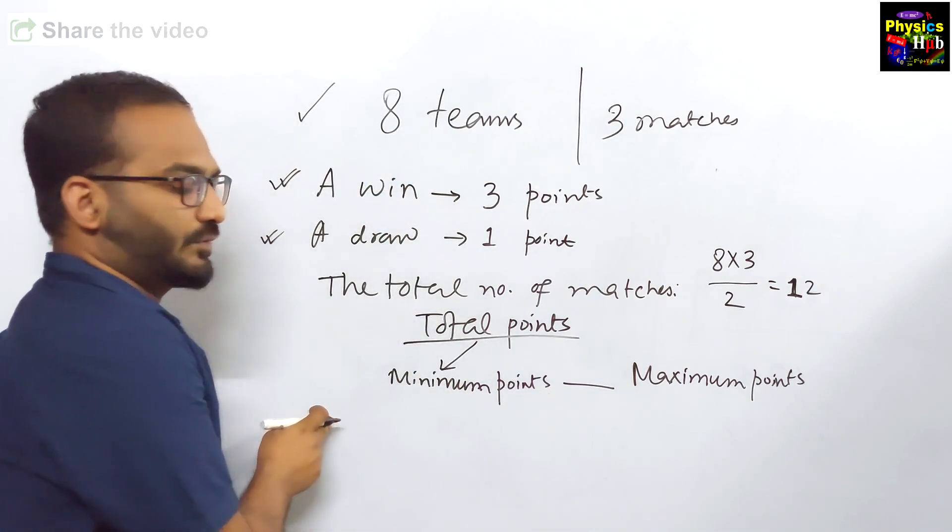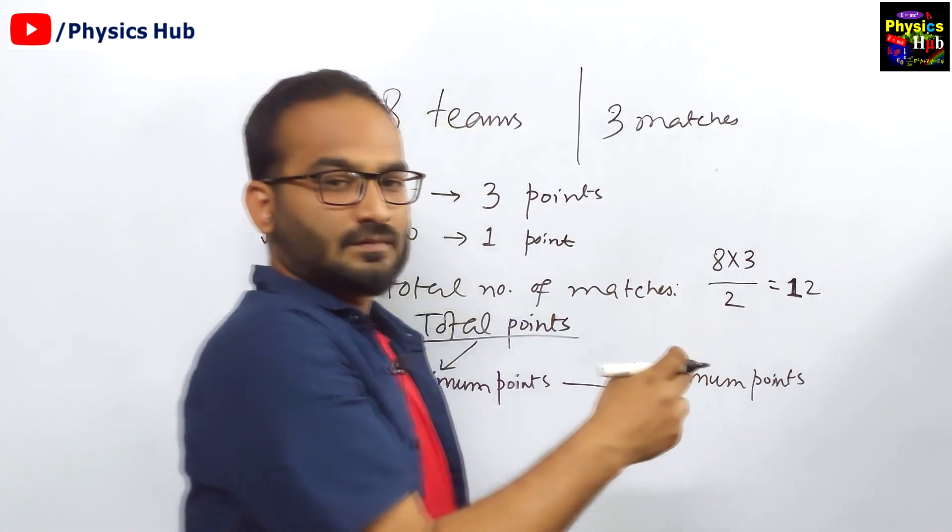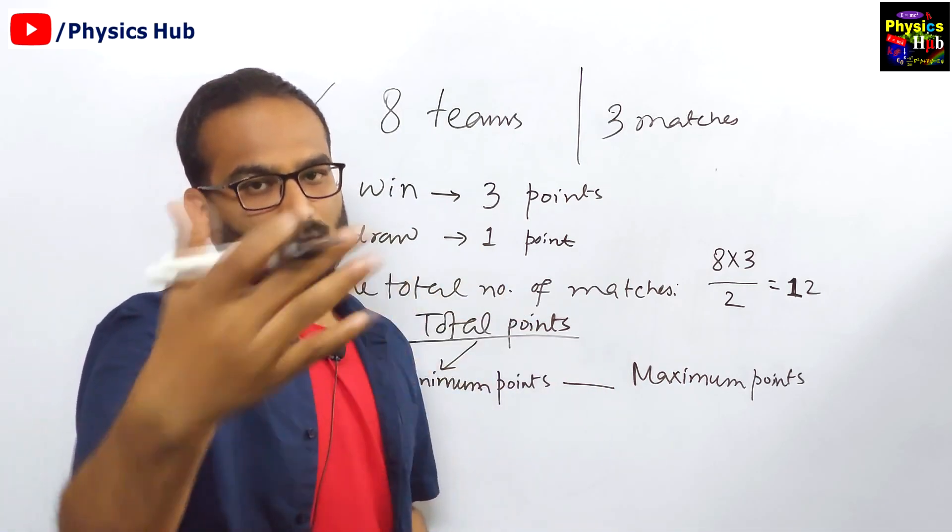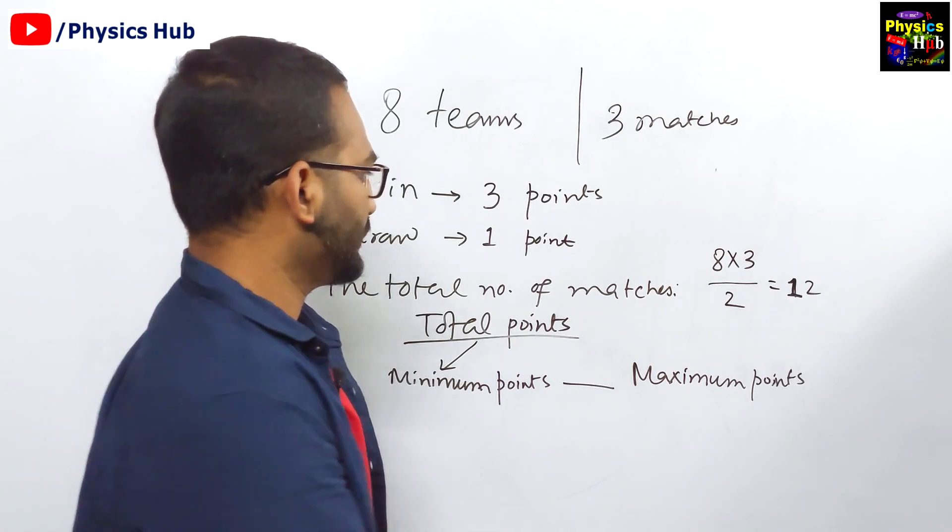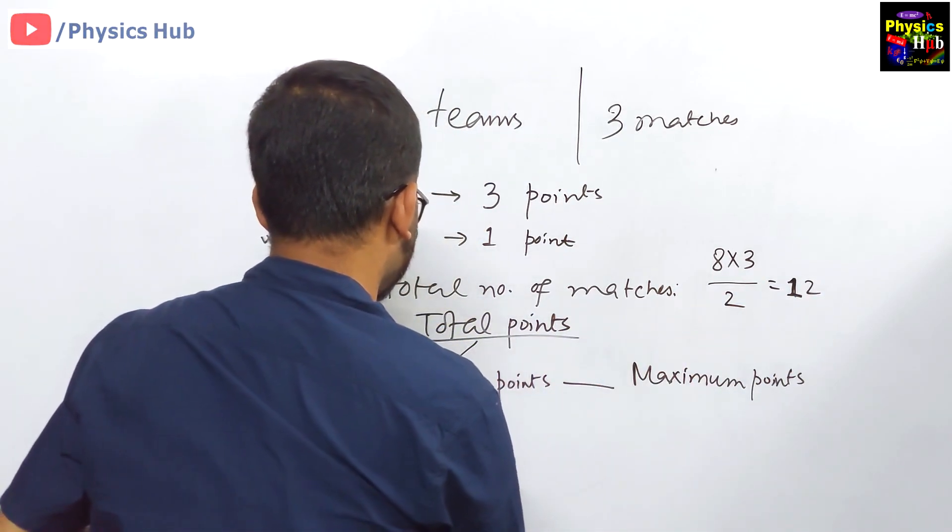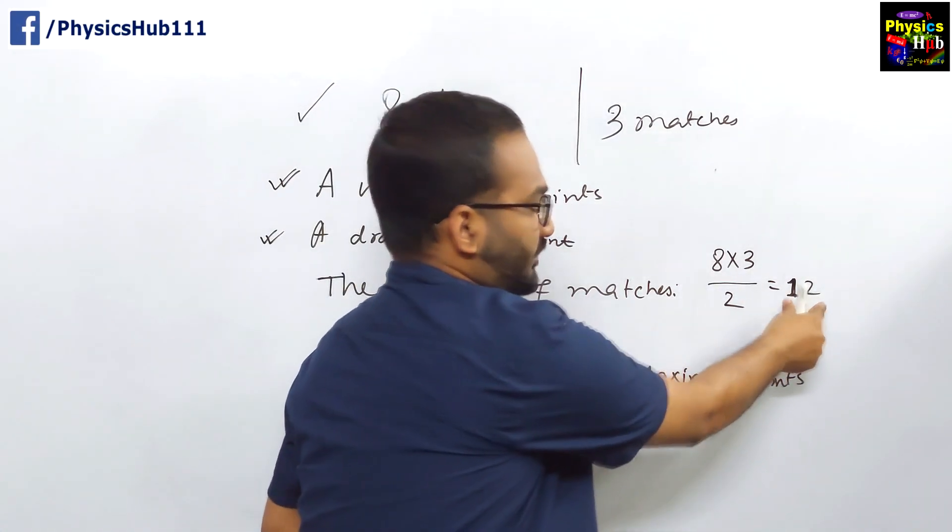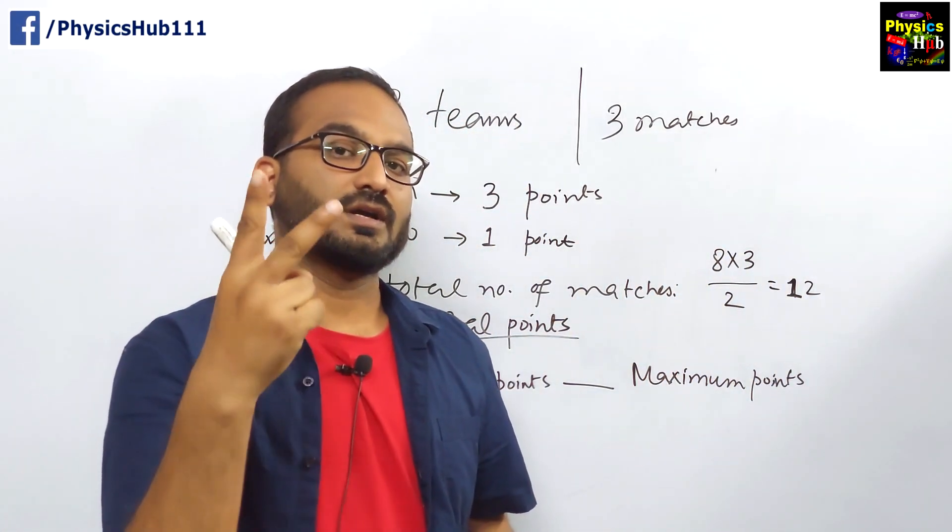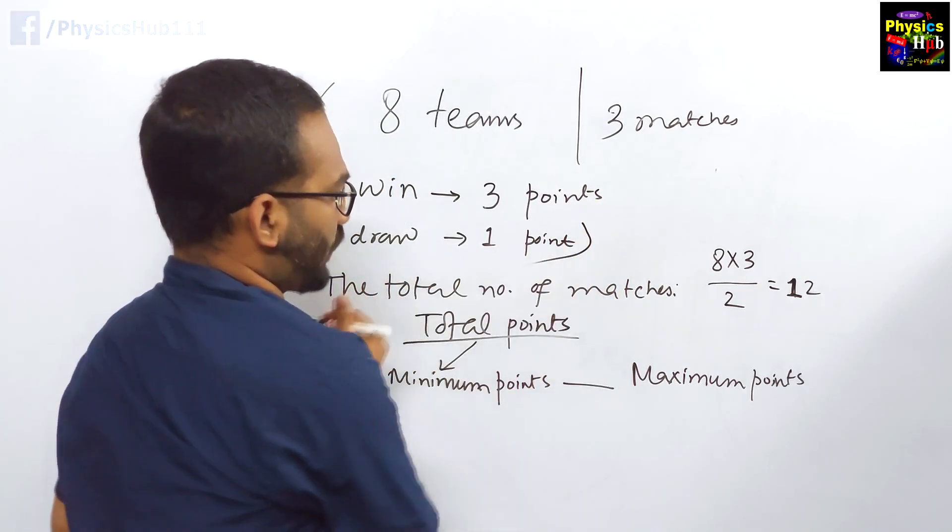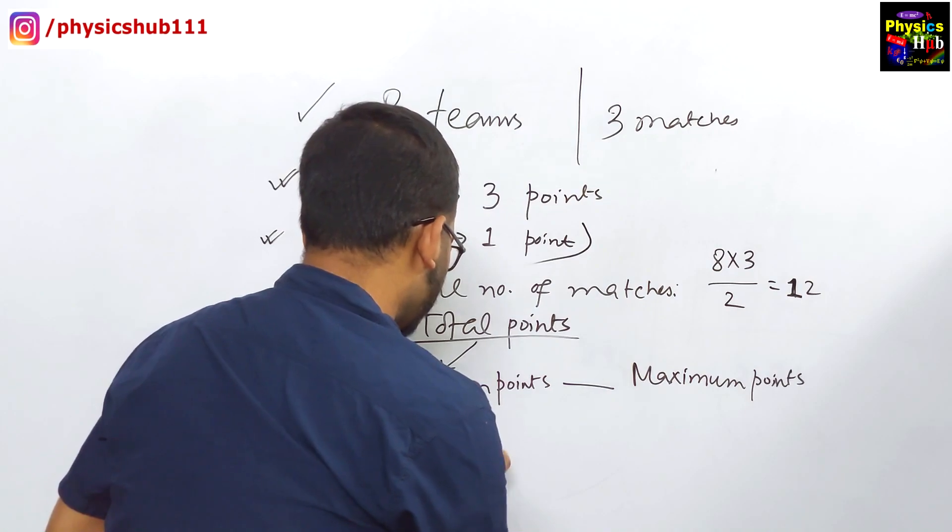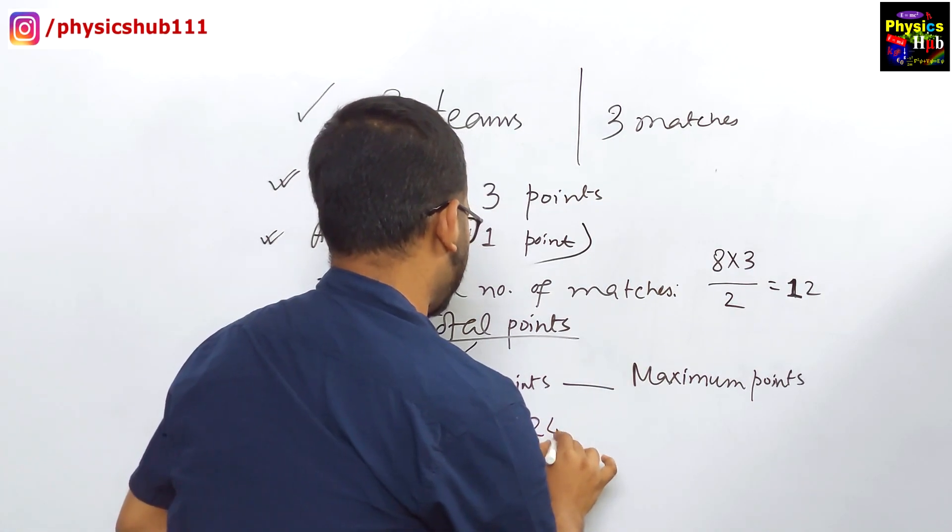This will be the scenario. So, what will be the minimum points? If let us say in 12 matches, no match is won, all the matches are draw. Then in that scenario, there will be total 12 matches. Total number of matches is 12. But in one match, there will be two teams. And both the teams will get one point if that is draw. So, minimum points will be 12 × 2. I hope you have understood this. So, 24.